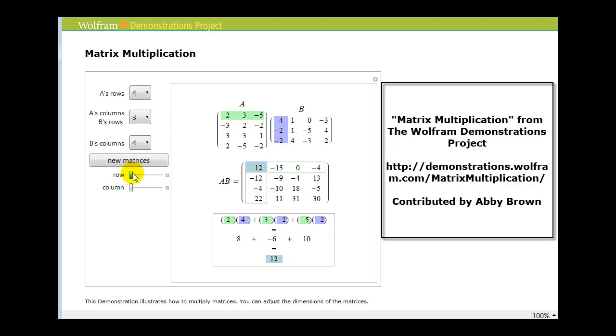For example, if we wanted to know the element located in row two, column three as we see here, we multiply row two in the first matrix times column three of the second matrix. As we see here down below, then we find the sum of those products and that's our element for that location.